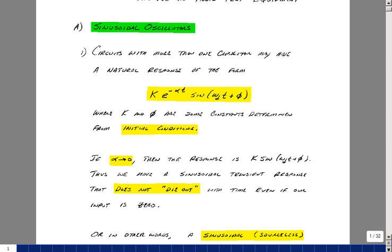It's possible with a perfect L and a perfect C to have the term alpha go to zero. If alpha goes to zero, then the transient response becomes a sine wave. Now we don't have a perfect inductor and a perfect capacitor, so we have to find some way to create that effect.